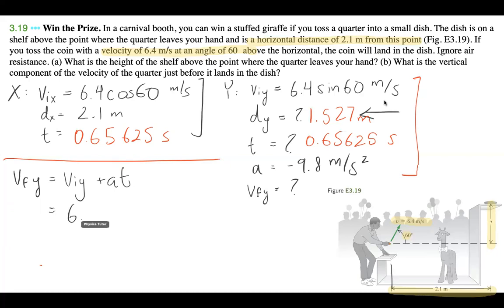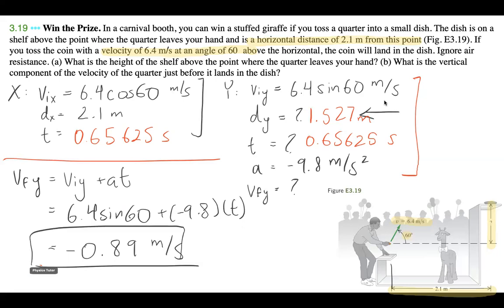Okay, so I'm going to plug in my values. I have 6.4 sine 60 plus negative 9.8 times t. And with that, I get, just going to double check, 6.4 sine 60 minus 9.8 times 0.65625, I get minus 0.89 meters per second. So that is the vertical component of the velocity of the quarter just before it lands in the dish. So I'm going to write that down right here in red as well, just to be consistent.